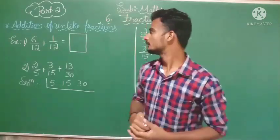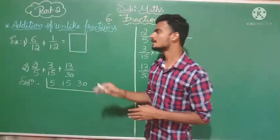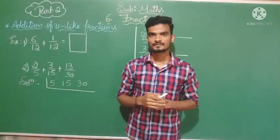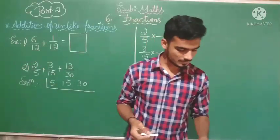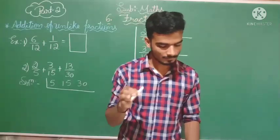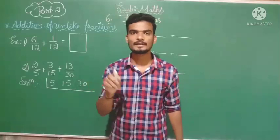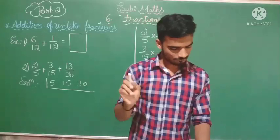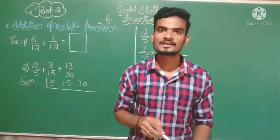In today's class, we will discuss addition of unlike fractions. If unlike fractions arise, how do we add them? First, I have taken one example. In order to add unlike fractions, we have to convert them into like fractions by finding the LCM and using it as a common denominator for all the given fractions.